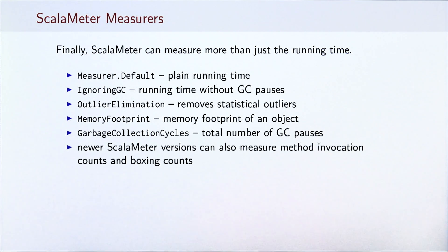Finally, Scalameter can measure more than just running time. So far, we've seen examples that use default measurer, which just measures the plain running time. IgnoringGC measures the running time without GC pauses. The outlier elimination measurer removes statistical outliers from the measurement. We can also measure different values, not just the running time. MemoryFootprint measures memory footprint of an object. GarbageCollectionCycles measures the total number of GC pauses during the execution of the benchmark. Newer Scalameter versions can also measure method invocation counts and primitive value boxing counts.